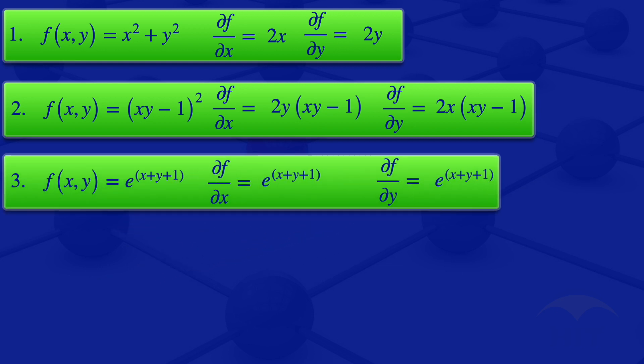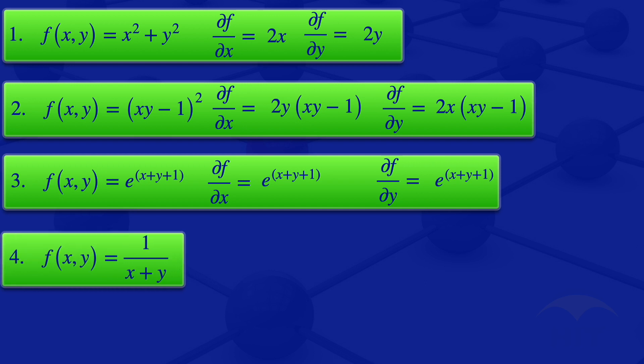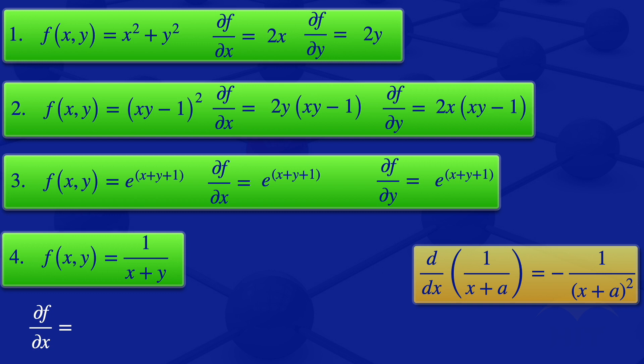I now move on to the last question, where f(x, y) = 1/(x + y). For the partial derivative of f with respect to x, we treat y as if it's a constant. For a function of the form 1/(x + a) where a is a constant, the derivative is −1/(x + a)². Treating y as a constant, the partial derivative of f with respect to x is −1/(x + y)².